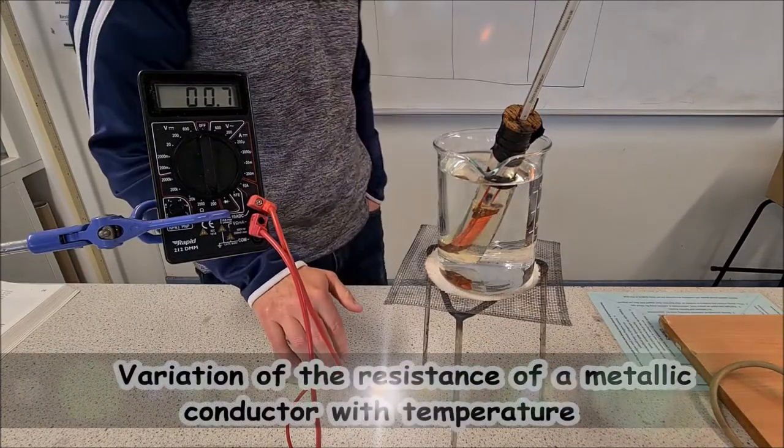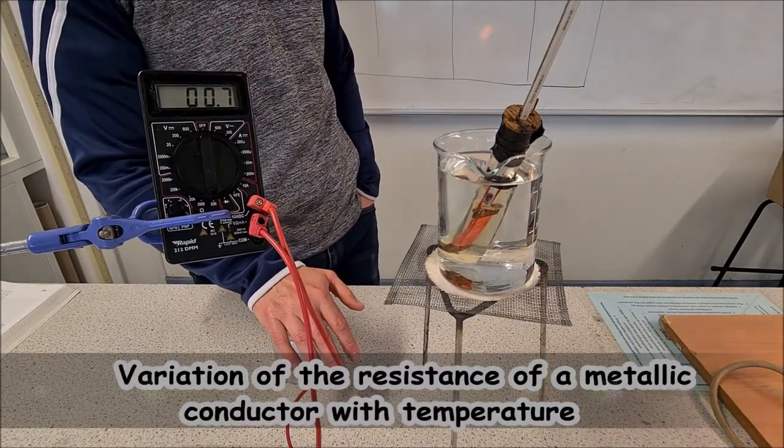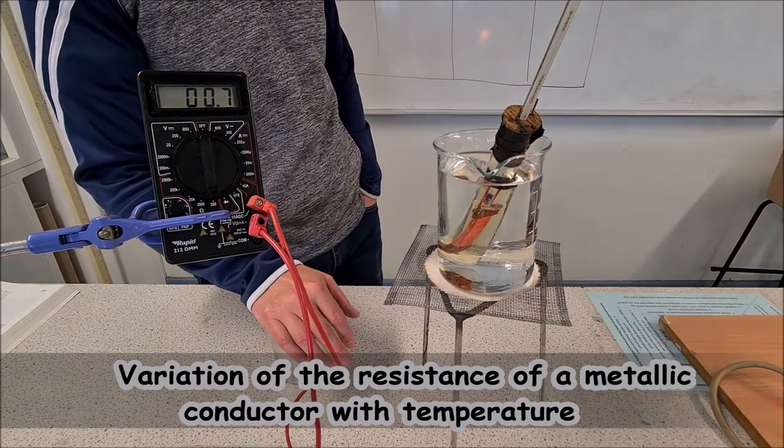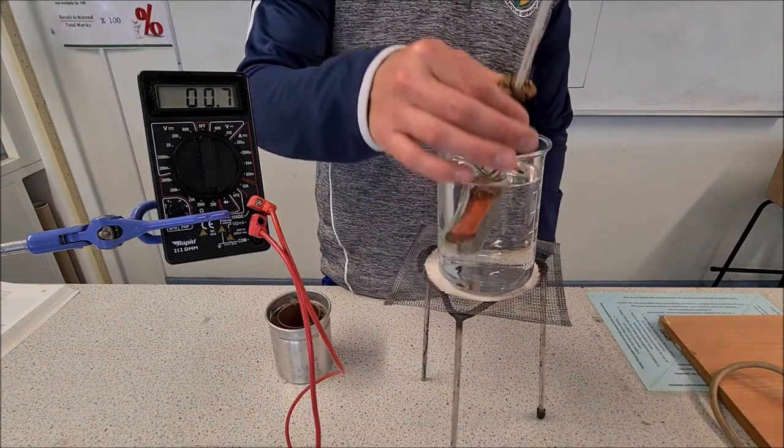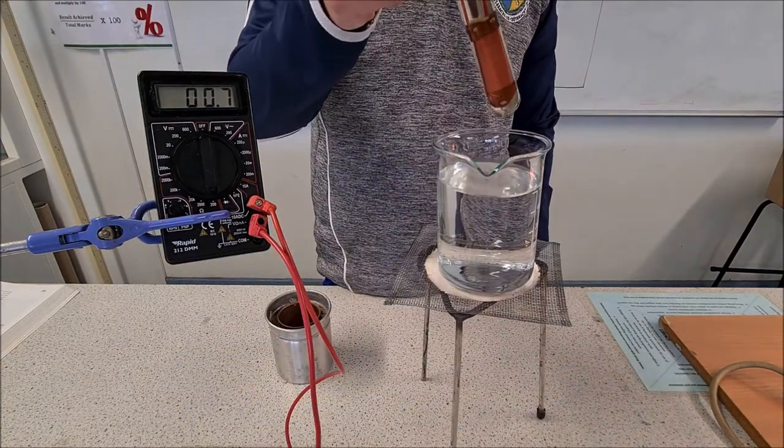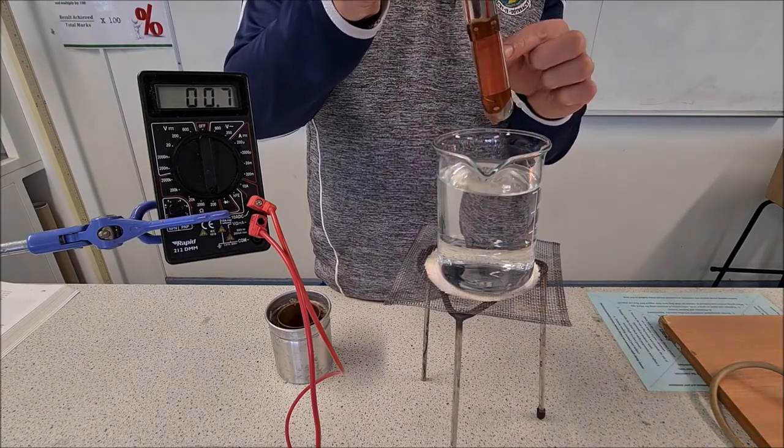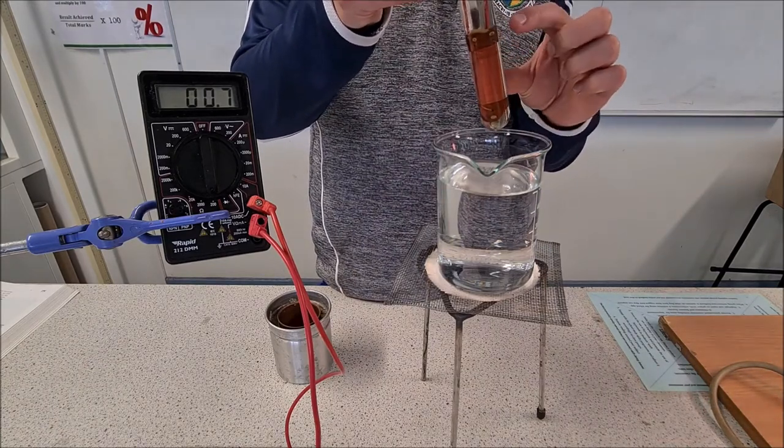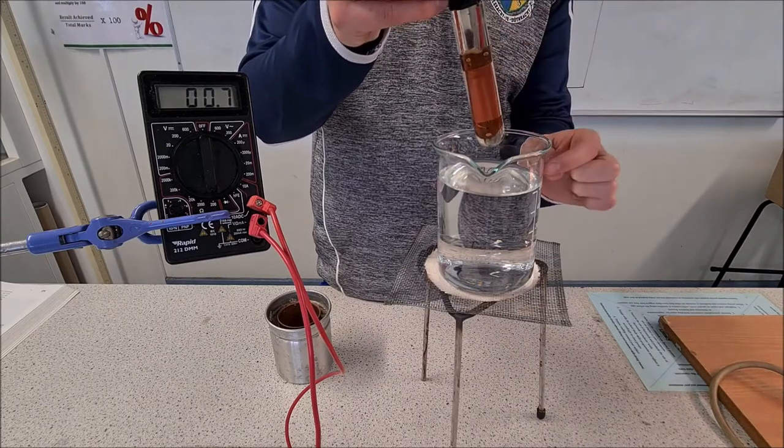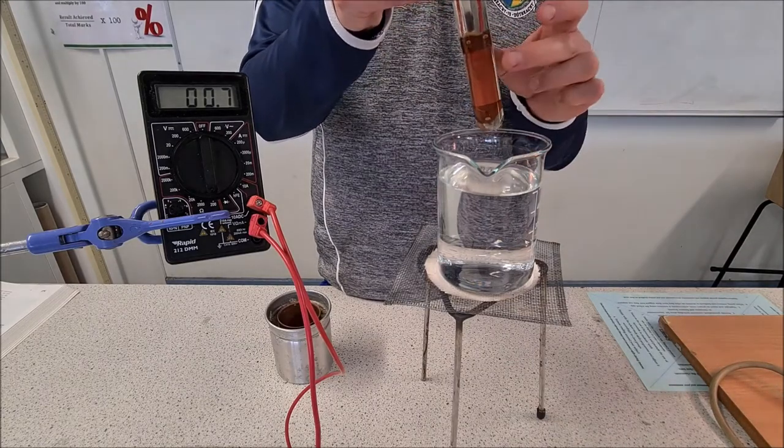This is number one to investigate the variation of the resistance of a metallic conductor with temperature. We have our metallic conductor which is a copper coil inside here. It's in glycerol, in oil, so that the temperature is more stable than water. The water will heat up very quickly, the oil will heat up a bit slower.